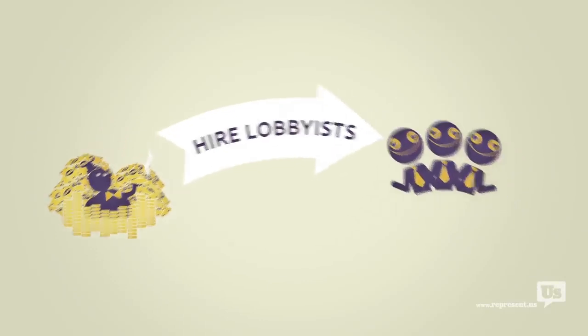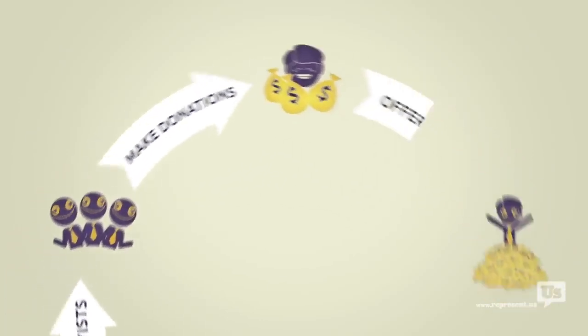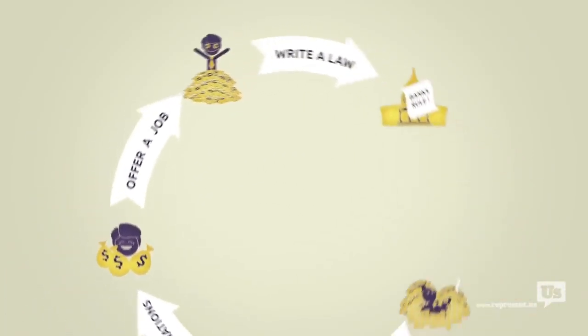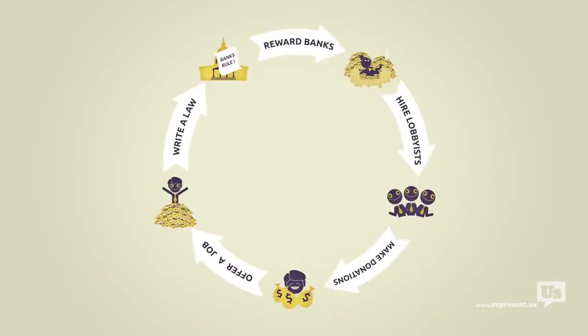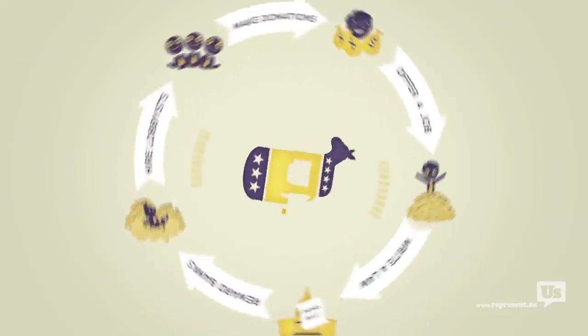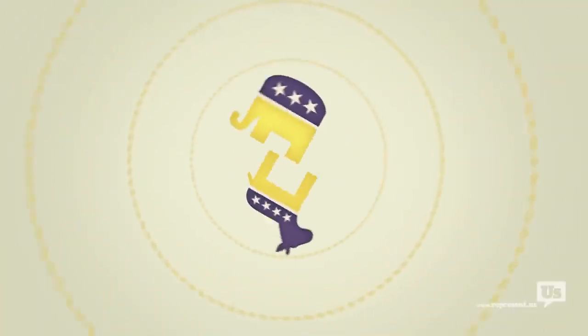A special interest hires some lobbyists. Those lobbyists collect campaign contributions, offer jobs, and then write the laws that Congress then passes to help those same special interests. This happens every day, on every single issue, with politicians of both parties.